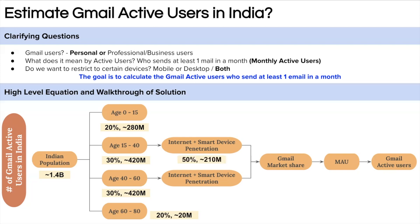We assume that around 50% of people aged 15–40 have access to the internet and smart devices, since many people in rural India still lack internet access. Similarly, only 30% of people aged 40–60 have internet and smart device access. This gives us around 336 million people in total.